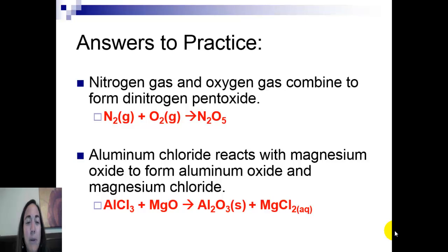Let's look at the second one. Aluminum chloride is AlCl3. I did the charge and crisscross method because this is an ionic compound. It reacts with, that's a plus sign. Magnesium oxide is ionic. The two's reduce away, so you get MgO. To form is the yield sign. Aluminum oxide, crisscross method, Al2O3, and magnesium chloride, MgCl2.